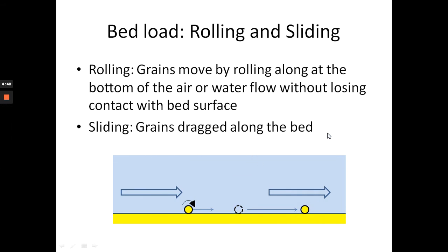For bed load, most of the time your grains are in contact with the bed and they can move along the bed in two ways. First is rolling — grains move by rolling along the bottom of the water flow without losing contact with the bed surface. There is sufficient boundary shear stress to move the grains, so they move in a rolling fashion. The second mode is sliding — grains are dragged along the bed by the current with no rotation. So rolling and sliding are both part of bed load transport, where sediment is most of the time in contact with the bed.